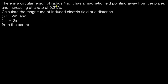There is a circular region of radius 4 meters. It has a magnetic field pointing away from the plane, and it is increasing at a rate of 0.2 teslas per second. The question is to calculate the magnitude of induced electric field at a distance of 2 meters and 6 meters from the center.